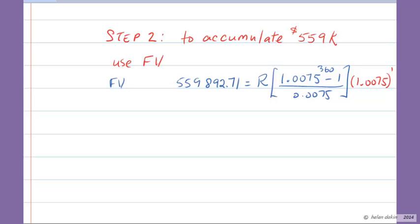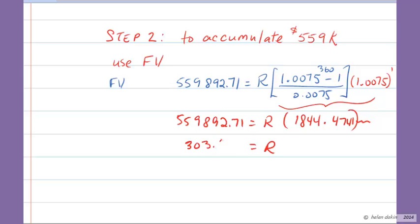And so we've got two factors on the right side of this equation here. We've got those two factors. And so we've got a new equation that says $559,892.71 is equal to R dollars multiplied by, when we work those two out together, you end up with 1844.4741 and so on. Store that in memory 1 and divide it into the 559k and you end up with R dollars equal to $303.55 per month.